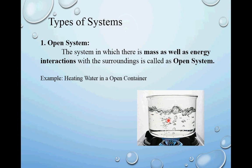Once 100 degrees Celsius is achieved, the water starts boiling and undergoes a phase change from liquid to steam. This steam starts evaporating and leaves the container into the surroundings. Over time, constantly heating this system results in a decreased amount of water, meaning mass is also leaving the system. So there is both mass interaction and energy interaction between system and surroundings — this type of system is called an open system.